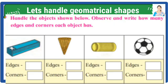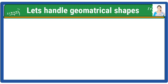Handle the object shown below. Observe and write how many edges and corners each object has. Compass box has 12 edges and 8 corners. Ice cream cone has 1 edge and 1 corner. Thread spool has 2 edges and 0 corners. Ball has 0 edges and 0 corners.